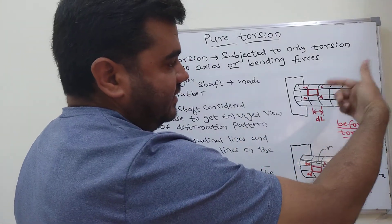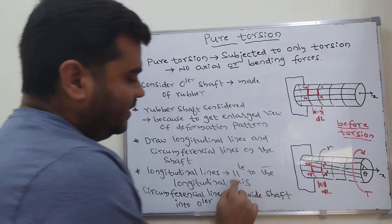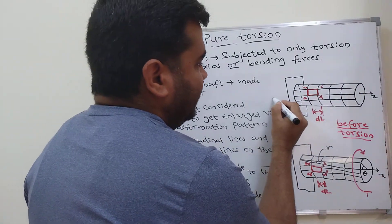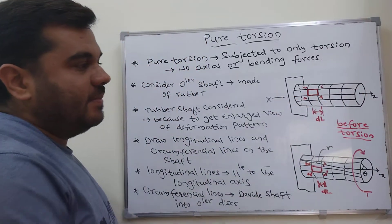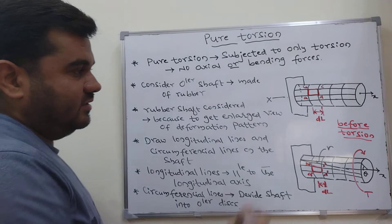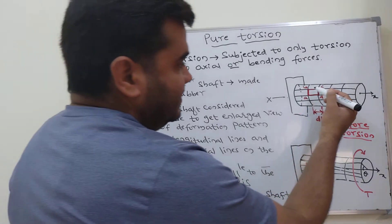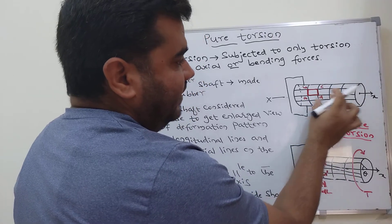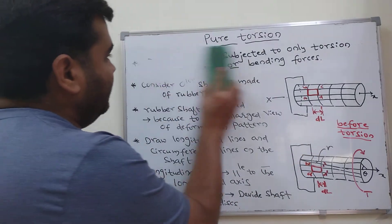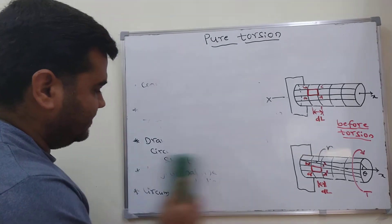These are all circumferential lines because they are lines along the circumference. Longitudinal lines are drawn parallel to the longitudinal axis — this XX is the longitudinal axis. Lines drawn parallel to XX are called longitudinal lines. Circumferential lines divide the shaft into circular discs. For analysis purposes, we will consider a small portion and discuss pure torsion.